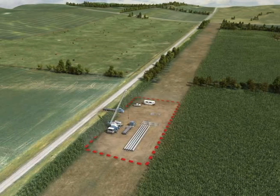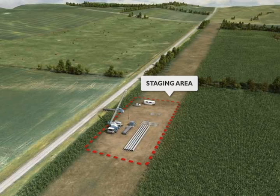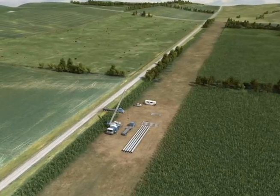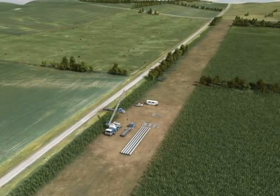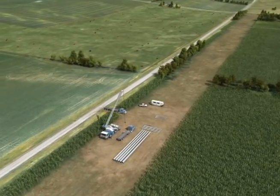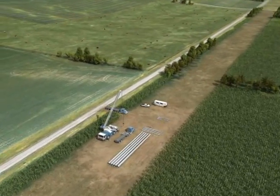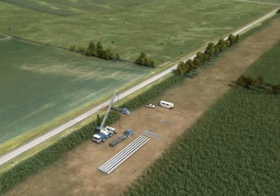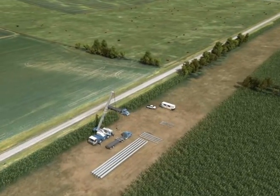Construction staging and lay-down areas will be developed near the construction zones. These areas will be used to temporarily lay out equipment and materials to be used for the specific construction activities at nearby locations. They may also serve as field offices, reporting locations for workers, and locations for equipment maintenance.